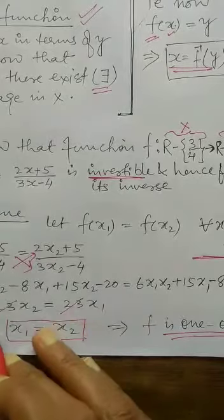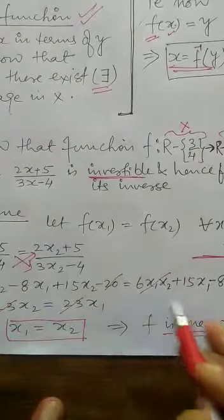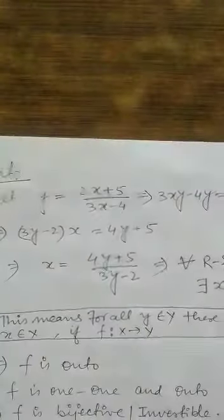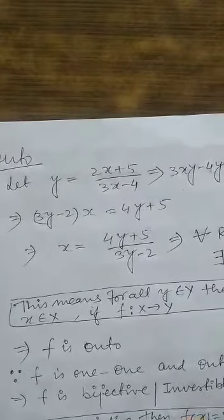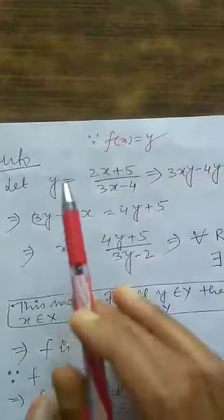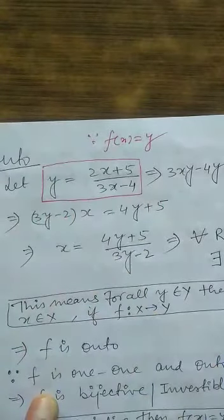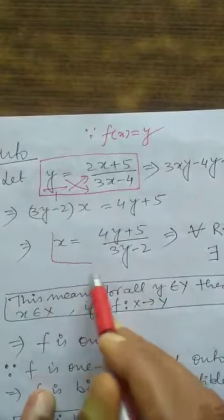When you simplify the cross multiplication, the 6x1·x2 terms cancel, the −20 terms cancel, and combining the remaining terms gives x1 equals x2. For the onto function, I told you that x is written in terms of y. So f(x) is taken as y. Since f(x) equals (2x + 5)/(3x − 4), this means y equals (2x + 5)/(3x − 4). Do cross multiplication to find x in terms of y.